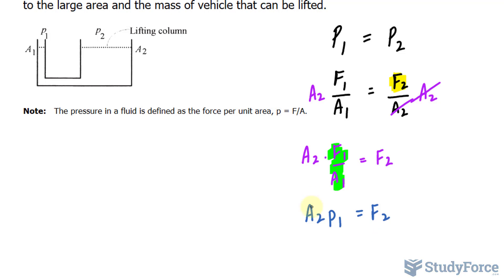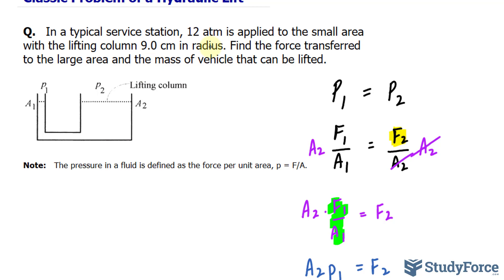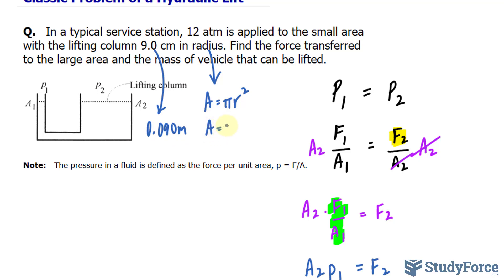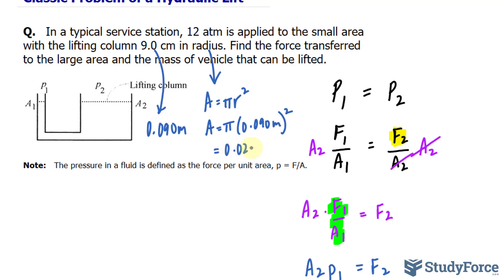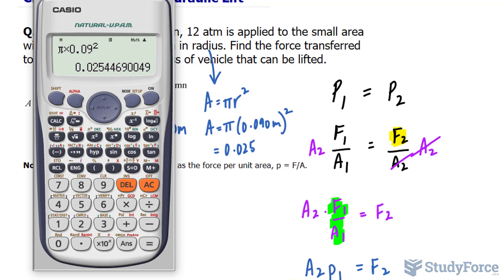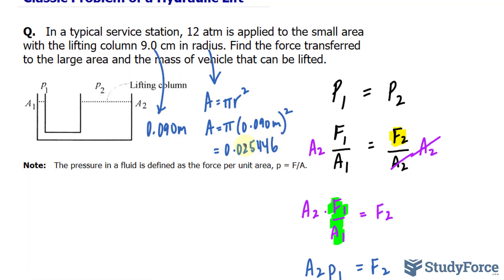The next thing I want to do is find the area for a lifting column that is 9 centimeters in radius. If we're talking about radius, it's definitely a circle, and the area of a circle is pi R squared. I'll convert 9 centimeters into meters because newtons — the unit of force — is associated with meters, not centimeters. So 9 centimeters equals 0.090 meters. The area is equal to pi times 0.090 meters squared, which gives 0.025446. To two significant figures that's 0.025, but I'll include a few more digits to avoid rounding errors, placing a dot underneath the 5 as a reminder.